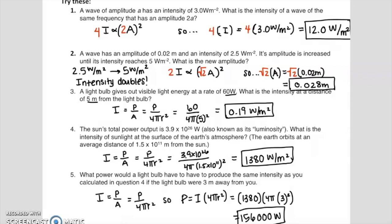Here are the answers to problems one through five. In number four, you may recognize this answer of 1,380 watts per meter squared — this is actually called the solar constant, and it comes up a lot when calculating the power that solar panels can produce. Number five is a strange question: it's essentially asking what power a light bulb needs so that when you stand three meters away, you experience the same intensity as the Sun. That's a very powerful light bulb — 156,000 watts — whereas a regular light bulb is like 60 watts.